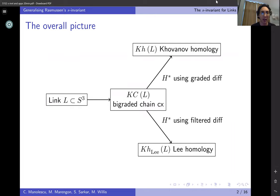Here's the overall picture. This is a review of what happens for links in the three sphere. If somebody hands you a link in the three sphere, there's an algorithm to build a chain complex, the Khovanov complex. It's a complex of bi-graded groups and then you have two options.